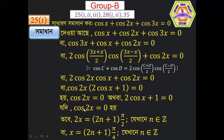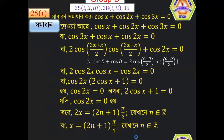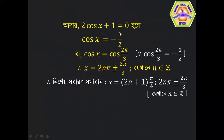From cos 2x = 0, we get x = (2n+1)π/4 where n is any integer. From 2cos x + 1 = 0, we get cos x = −1/2, which equals cos(2π/3), giving x = 2nπ ± 2π/3.